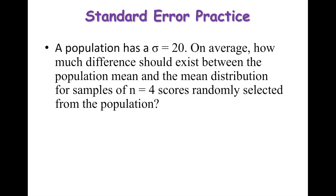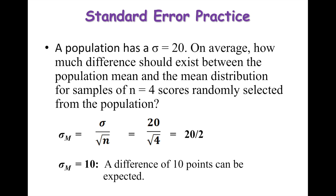Population has a standard deviation of 20. On average, how much difference should exist between the population mean and the mean of the distribution for samples of four scores randomly selected from the population? Standard error equals standard deviation divided by square root of n. So 20 divided by the square root of 4 is 20 divided by 2, which equals 10. You can expect to see a difference of about 10 points.